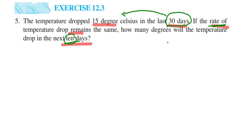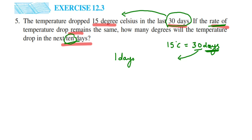Here they have given: 15 degrees Celsius equals 30 days. We need to find out for one day — how much temperature has dropped. We have 30 on one side, so we transpose it to the other side. This gives us: one day equals 15 degrees Celsius divided by 30. That's the temperature drop for one day.